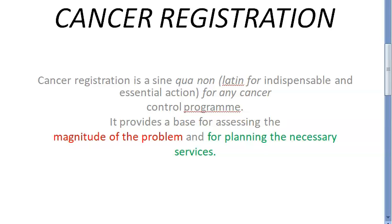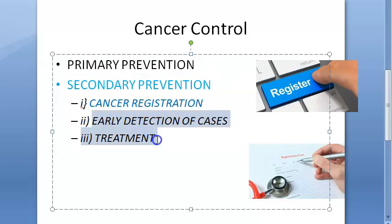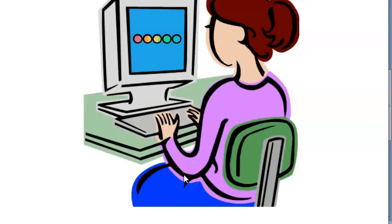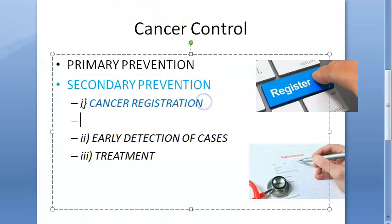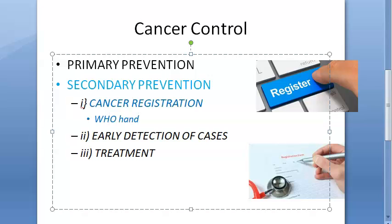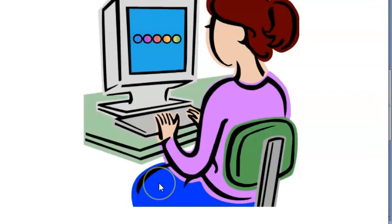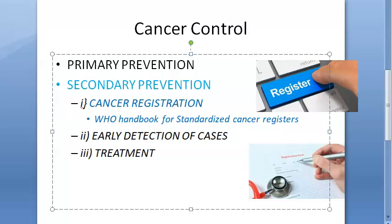A uniform minimum data set should be registered as per the WHO handbook of standardized cancer registers. In most secondary prevention, you have early detection and treatment. But in cancer, they add one special thing: cancer registration. WHO has a handbook for standardized cancer registers specifying the minimum data you should collect uniformly for everybody — at least age, type of cancer, and so on.